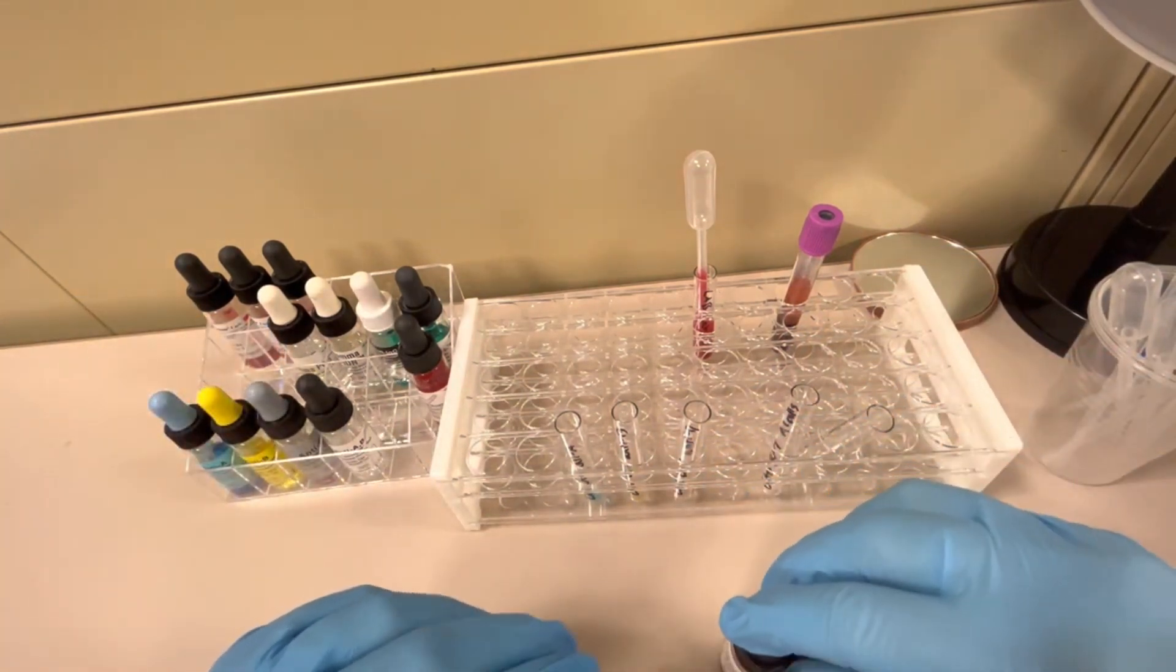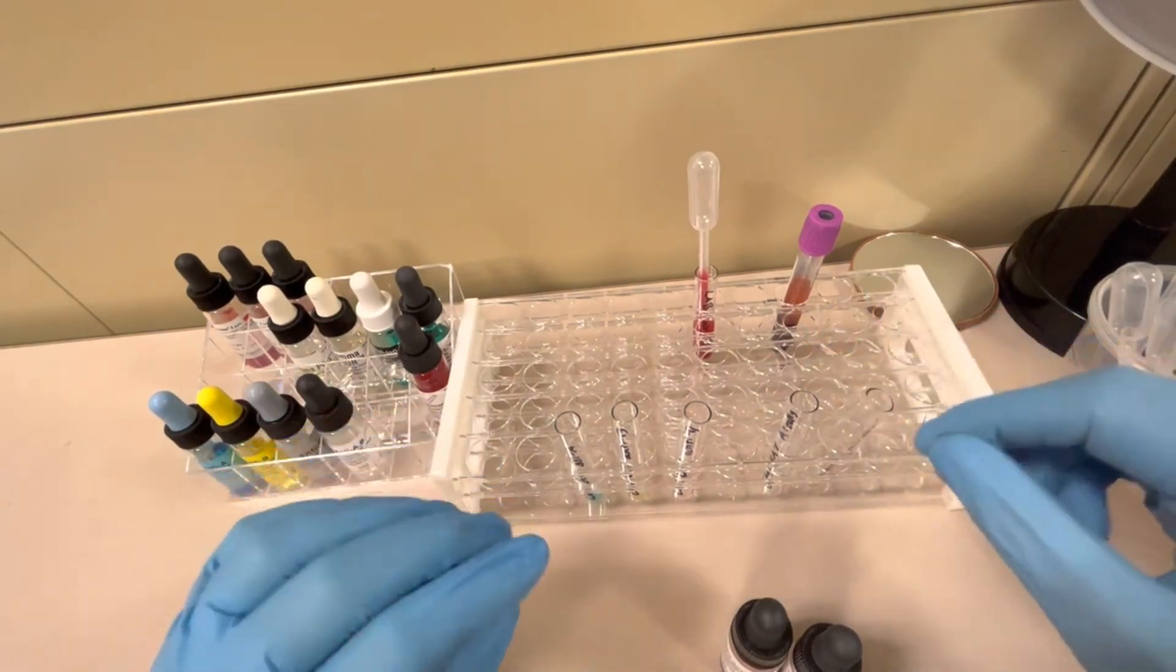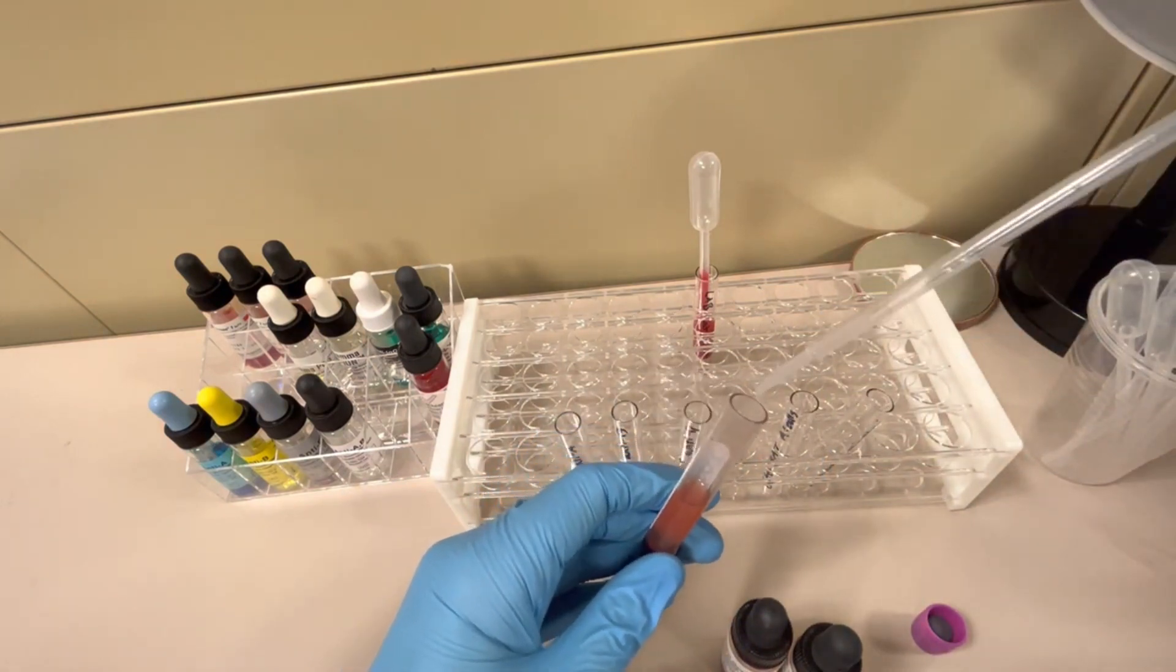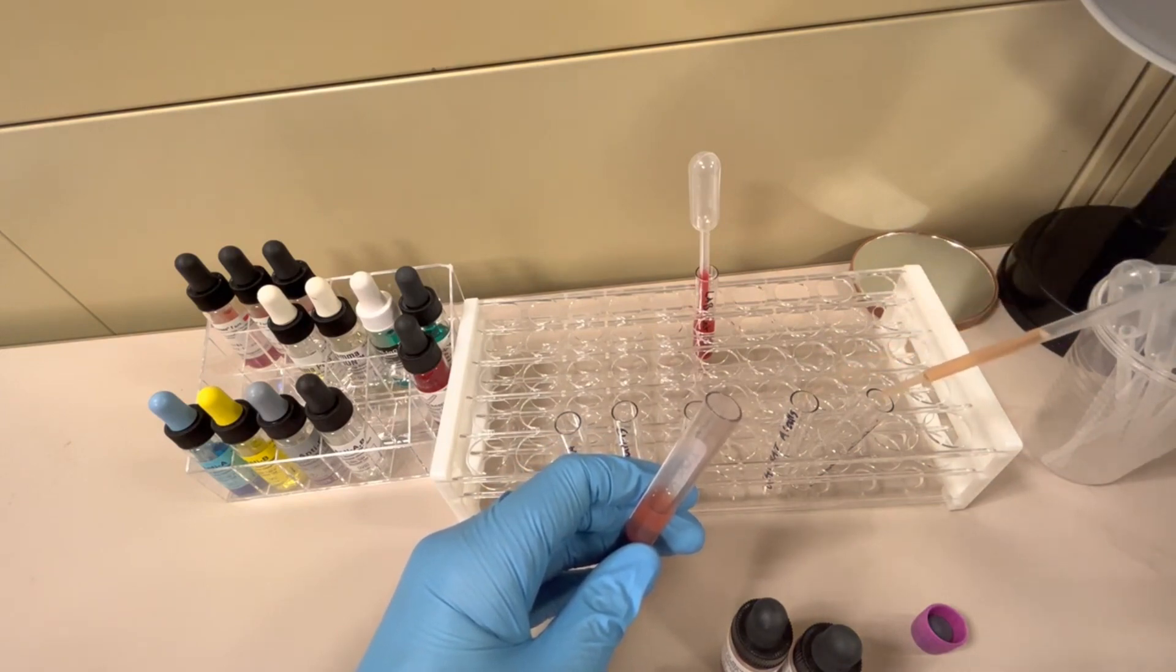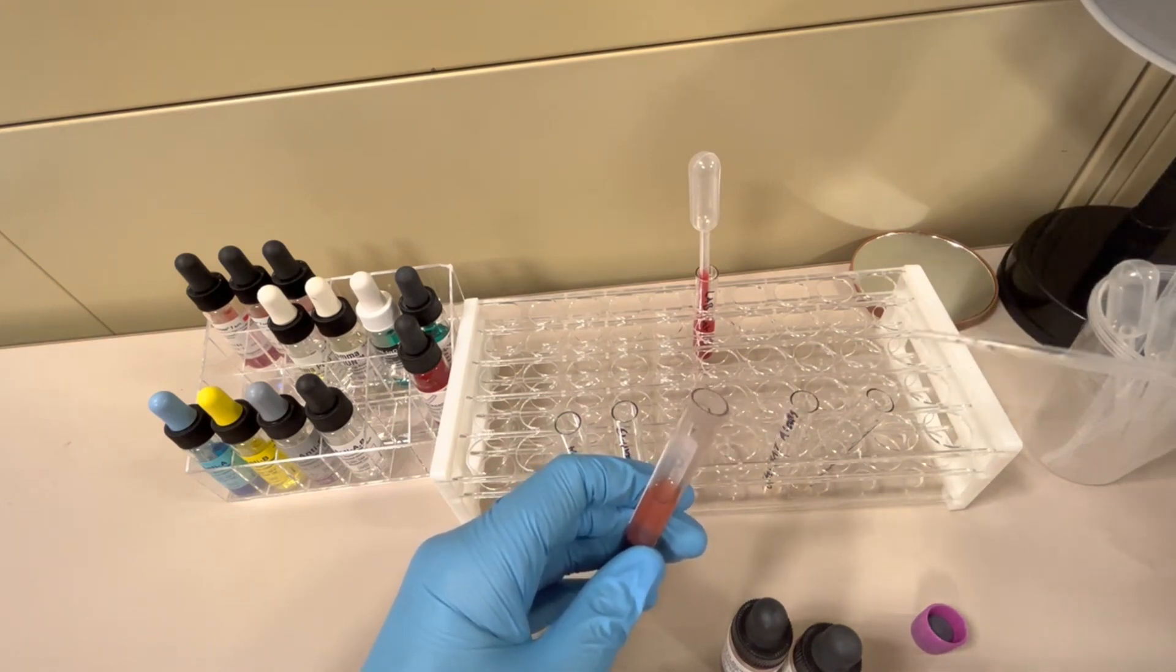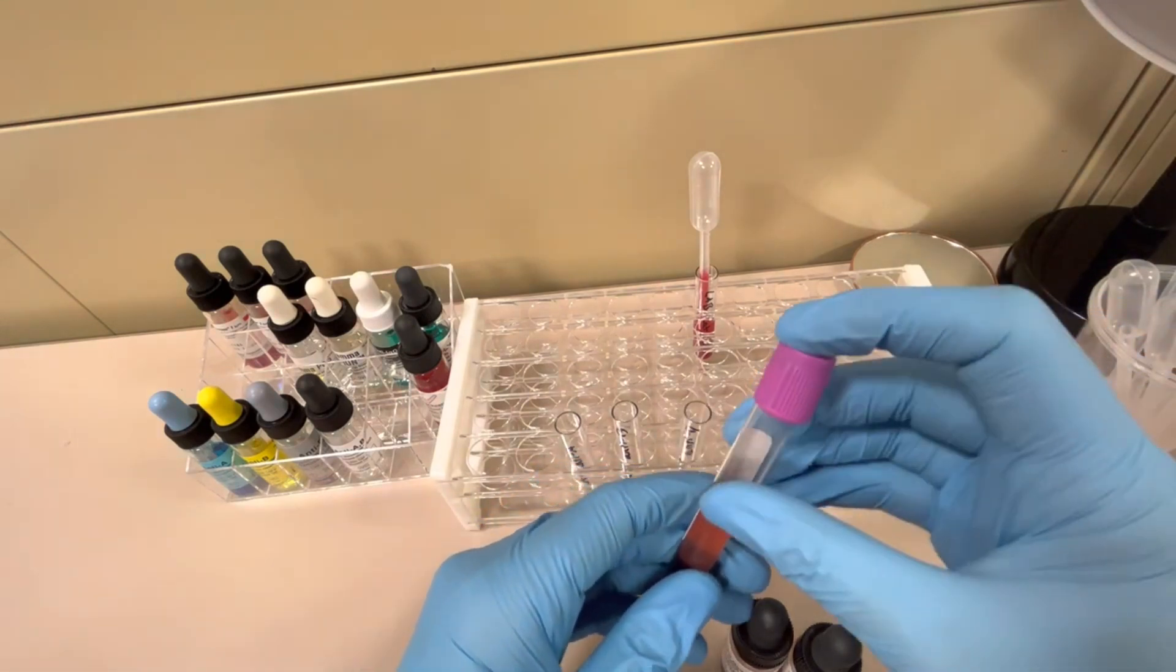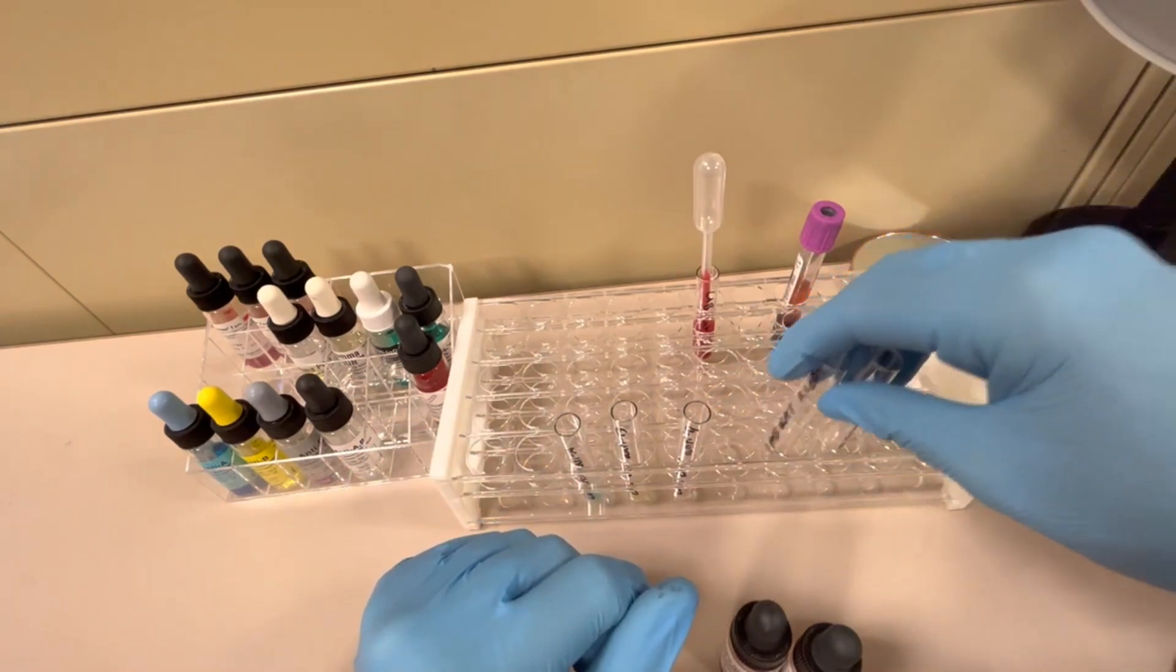I follow this rule: I always put the clear reagent or patient specimen into the tubes first. So I'm going to take my patient specimen, take the top off, and I'm going to add for my back type two drops in each of these tubes, because we're testing the patient plasma against known reagent red cells. Off screen, I'm going to dispose of this into a biohazard container and put the tube cap back on.